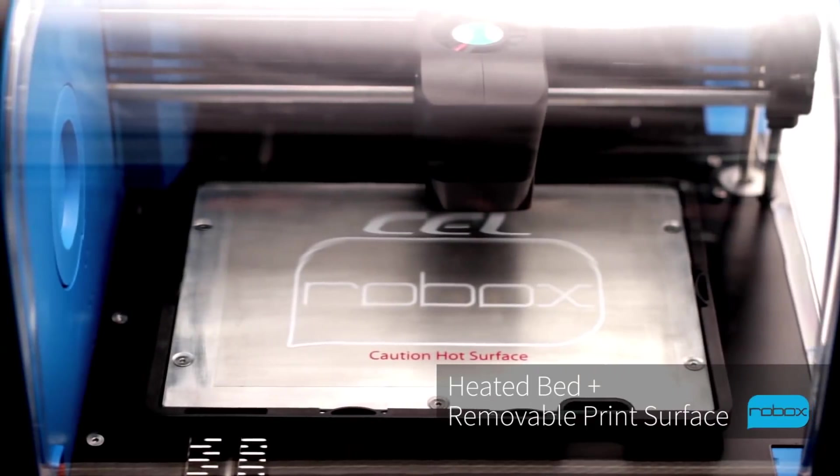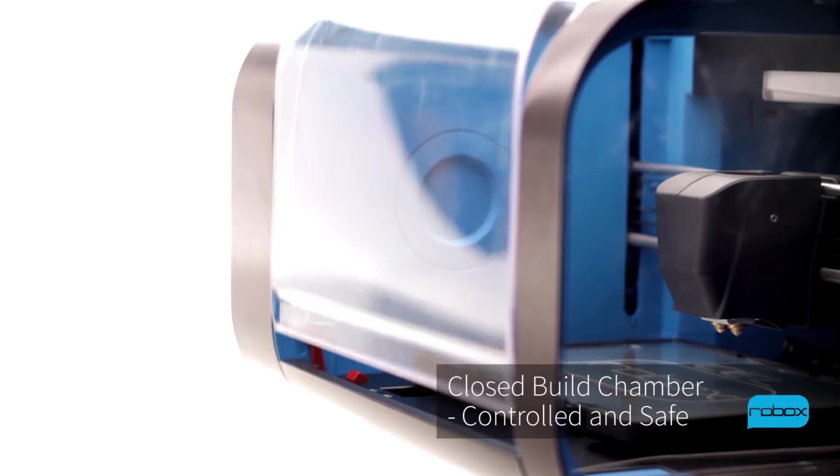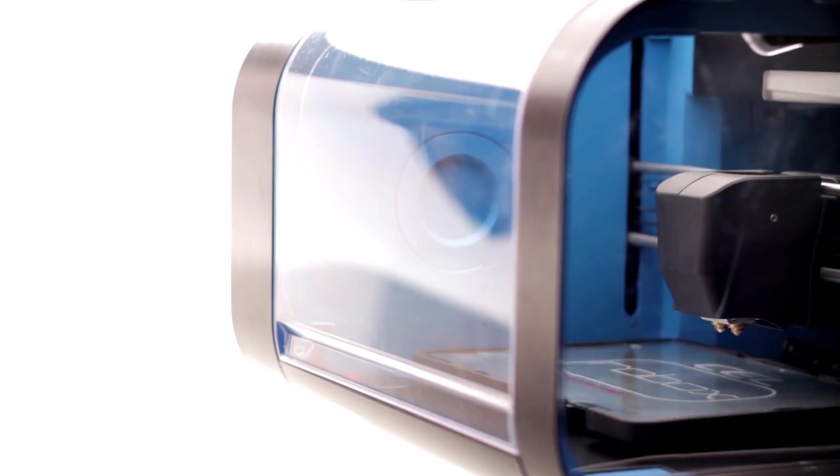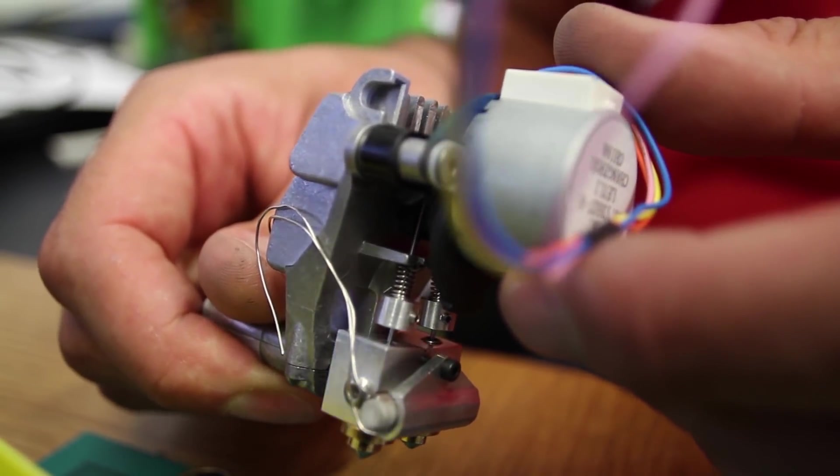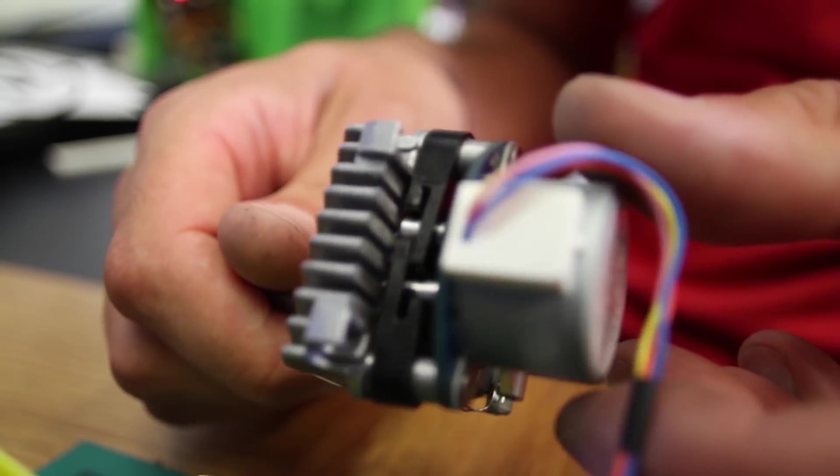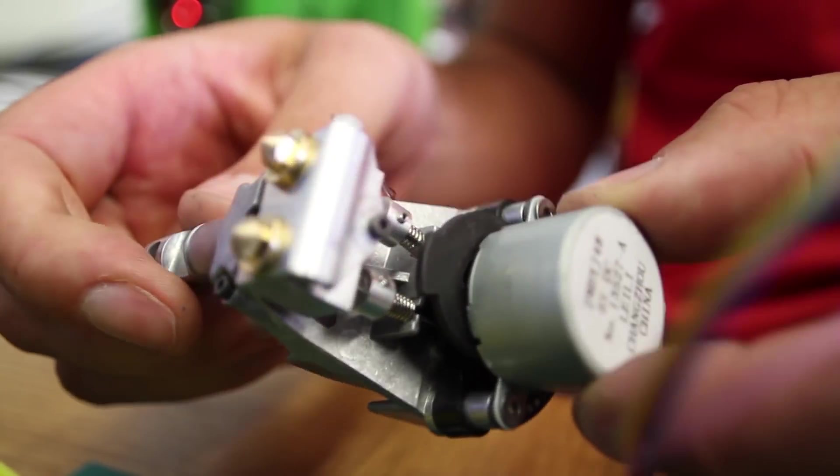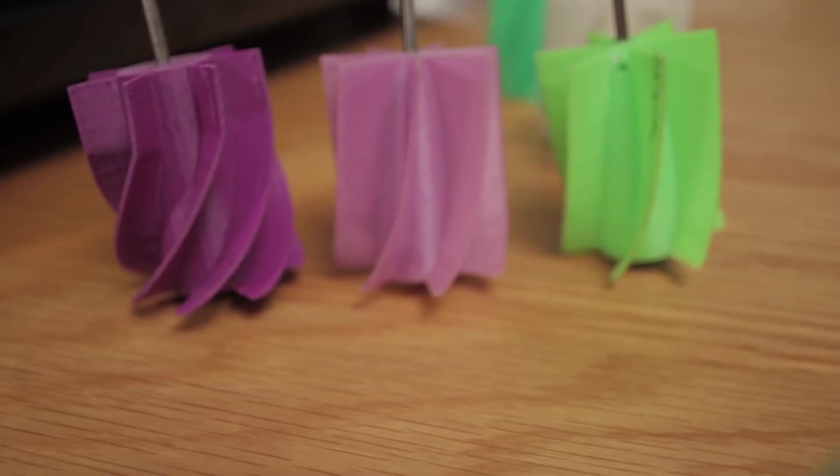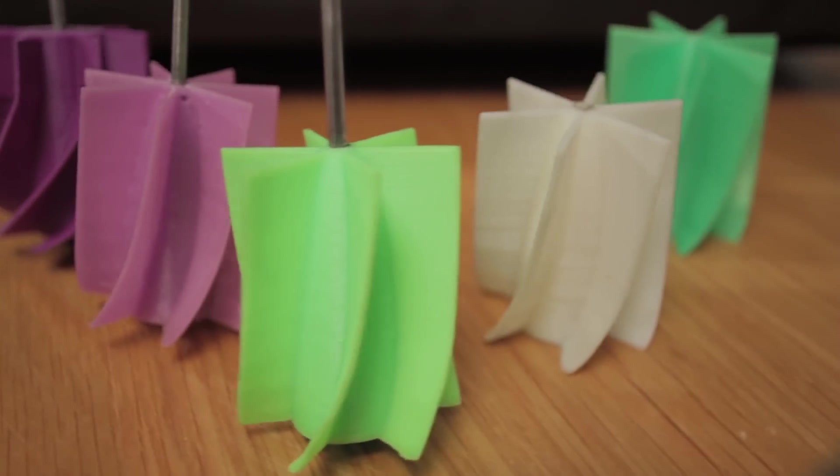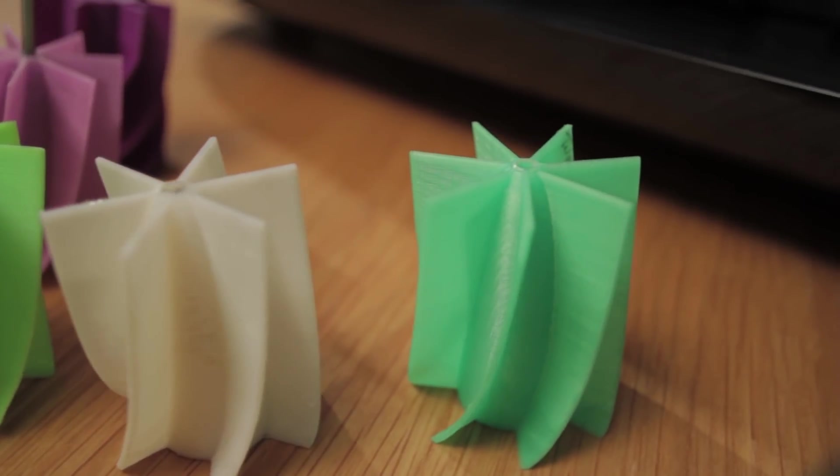Robox has every system in place to print the materials available on the market at the moment. We have a nozzle system which includes needle valves, so we're able to shut off the flow of plastic instantly. This means no more oozing, no more stringing as you move between parts, and no more bumps on the outside. This means perfect parts every time.